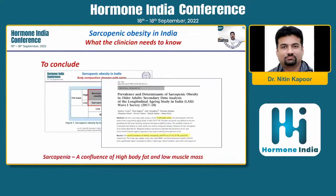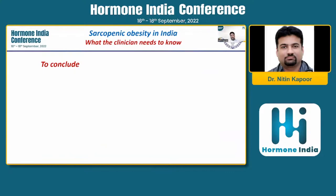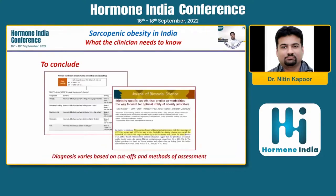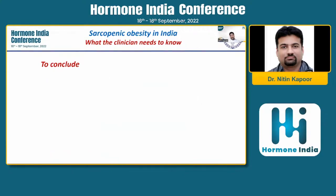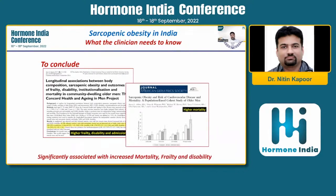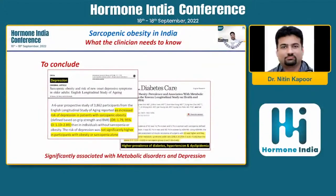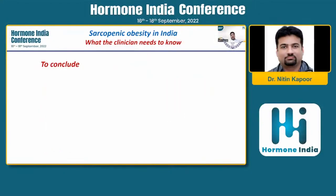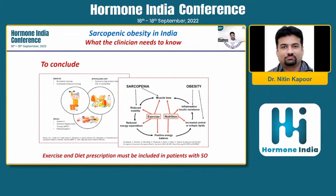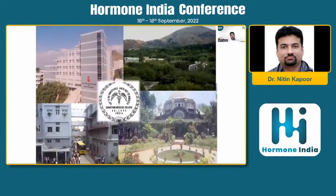To conclude: sarcopenic obesity is a confluence of high body fat with low muscle mass. We discussed simple methods of assessing it, including the SARC-F questionnaire. We looked at its impact on different metabolic parameters — mortality, depression, and metabolic syndrome. And we talked about how we address this problem in terms of treatment. Thank you, and I'd be happy to take any questions.